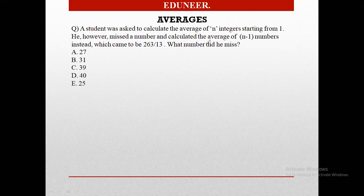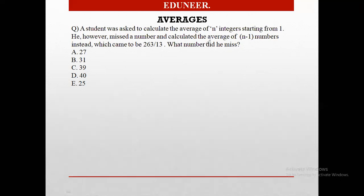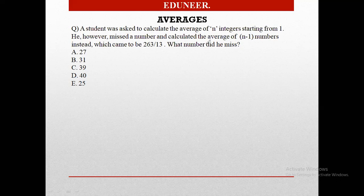So now we have tried it. Let us read the question and understand what it is all about. A student was asked to calculate the average of n integers starting from 1. He however missed a number and calculated the average of n-1 numbers instead, which came out to be 263 by 13. What number did he miss?